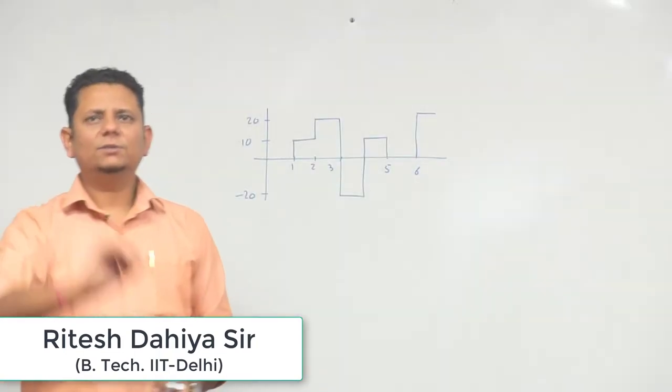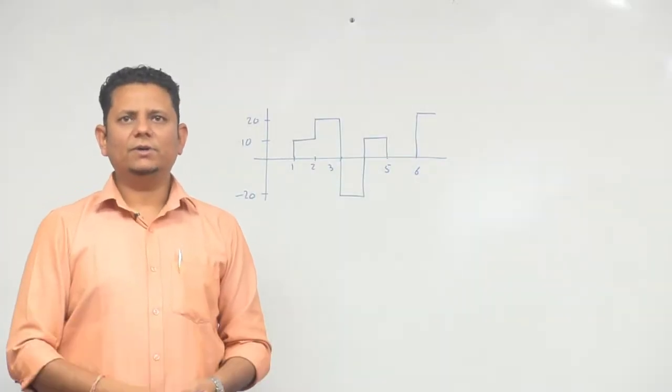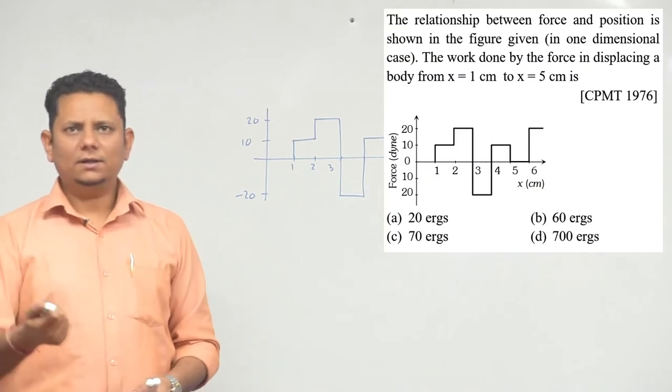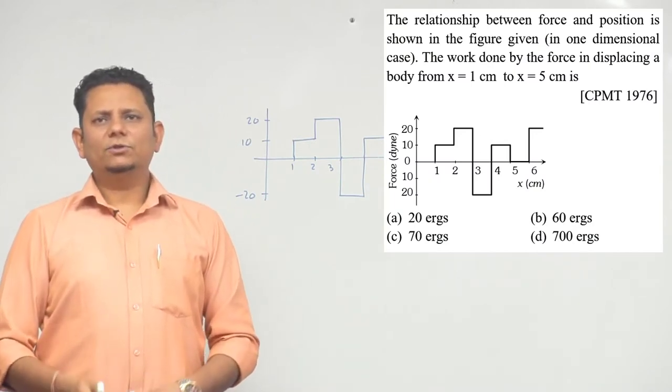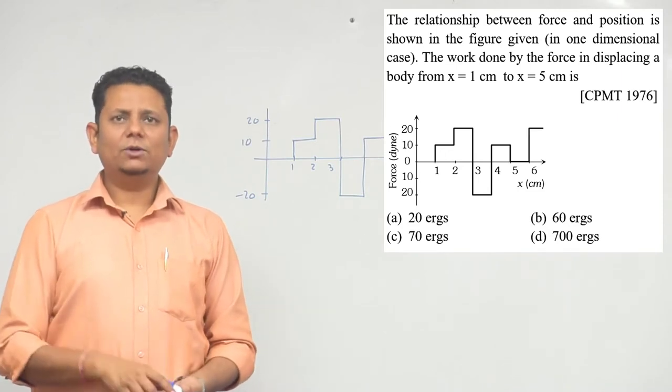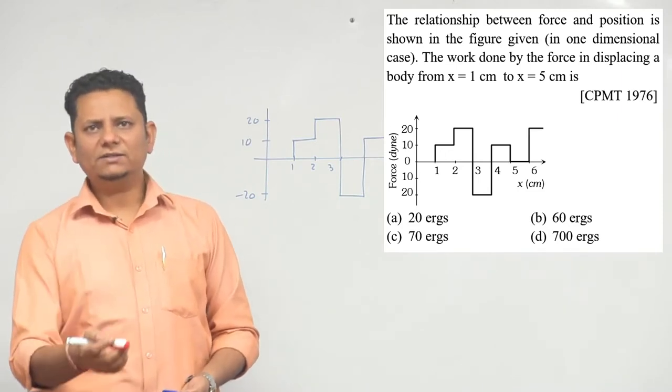The next question says the relationship between force and position is shown in the figure given. This is a one-dimensional case. The question asks for the work done by the force in displacing a body from x equal to 1 cm to x equal to 5 cm.